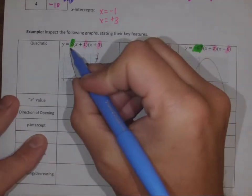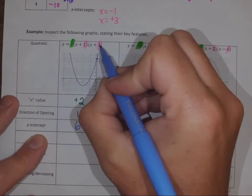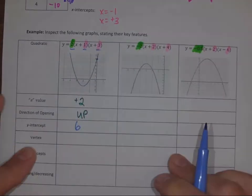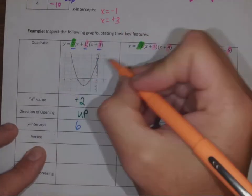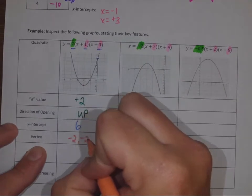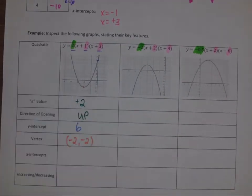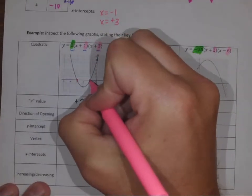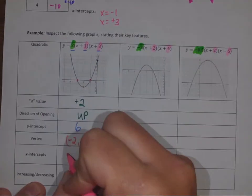How do those highlighted numbers relate? One times three is three, three times two is six. The vertex — we see the vertex at negative two, and in this case negative two. For the x-intercepts, what would x be to make each bracket equal zero?